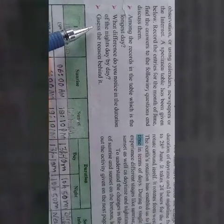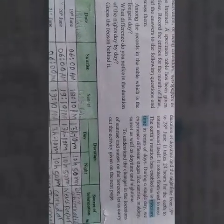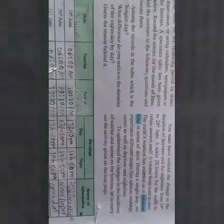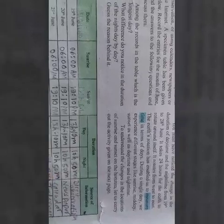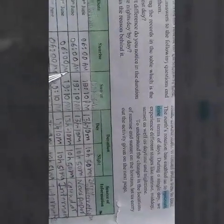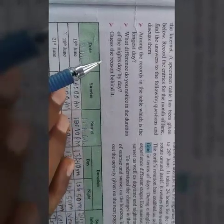The next question: guess the reason behind it. Previously we have discussed how day and night occur on the Earth. The reason is that the Earth rotates around its own tilted axis and revolves around the sun on its elliptical orbit. This is why the duration of the nights and also the duration of the day keeps changing day by day.